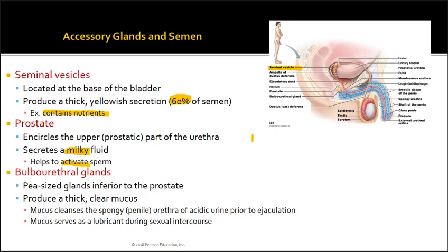The prostate secretes a milky fluid, and one of its important features is that it helps activate the sperm. The bulbourethral glands look like pea-shaped glands found beneath the prostate. They produce a thick clear mucus whose main role is to cleanse the urethra of acidic urine prior to ejaculation, since acidic urine is not a healthy environment for sperm. This mucus also serves as a lubricant during sexual intercourse to optimize fertilization.